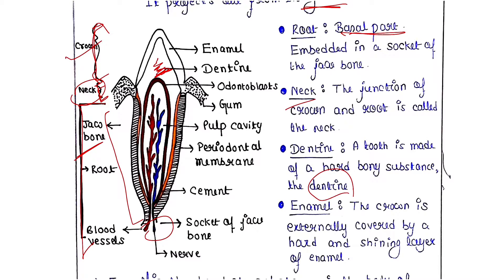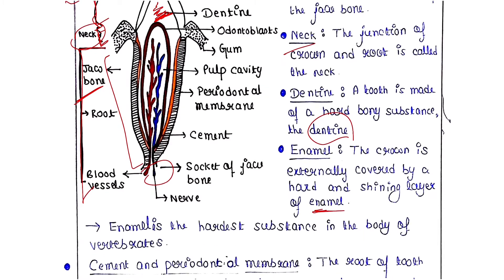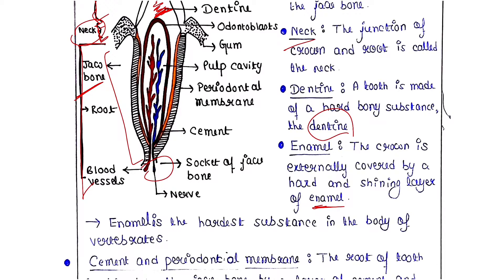The crown is externally covered by a hard and shining layer called enamel. The white shining part of the tooth that we can see is the enamel. It is very hard and covers the crown. In fact, enamel is the hardest substance in the body of vertebrates.